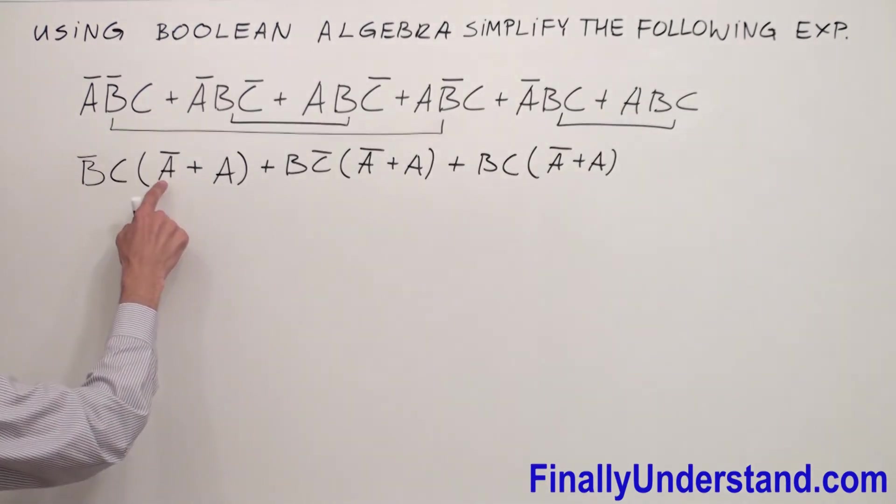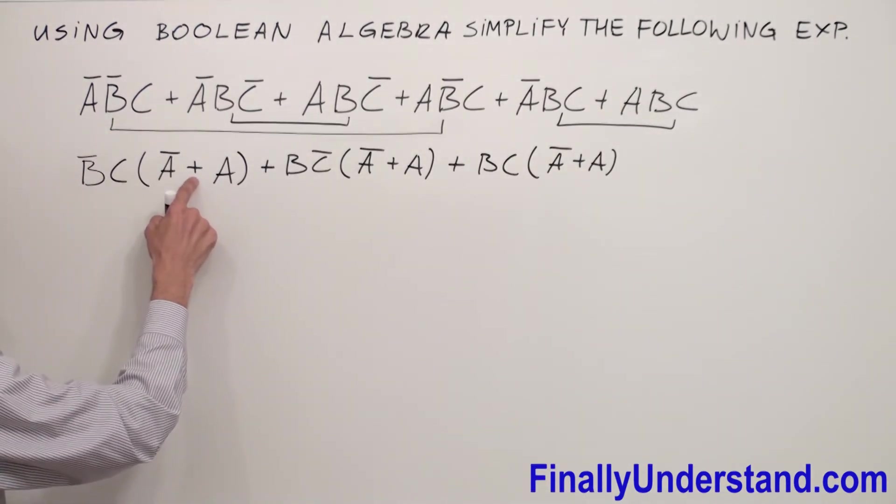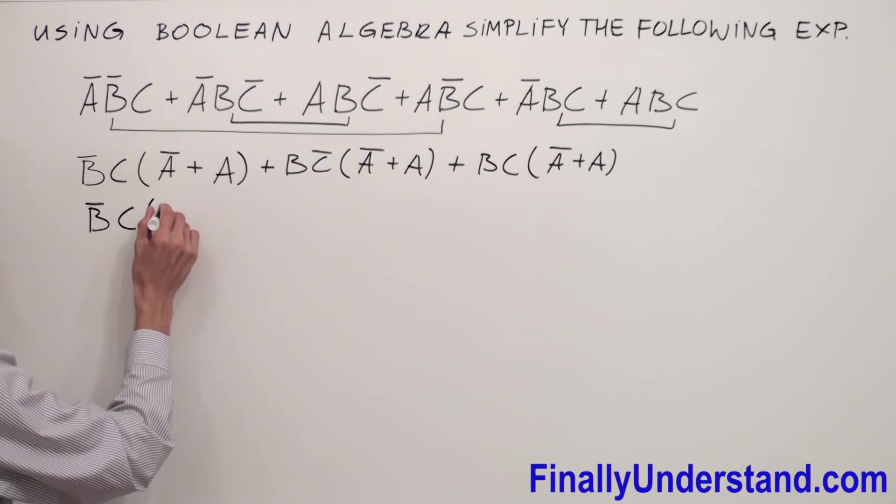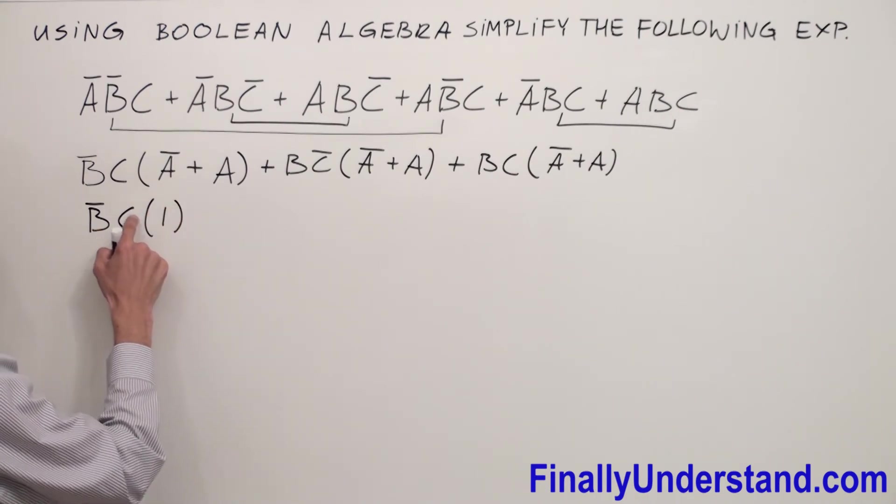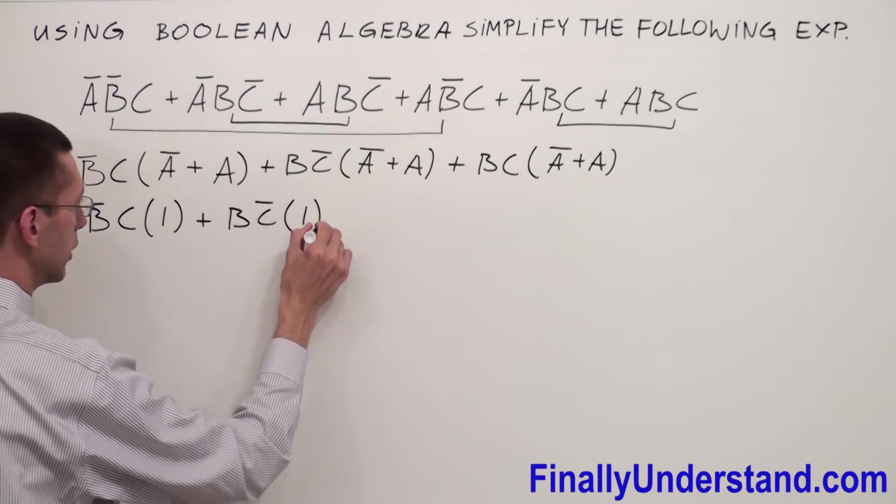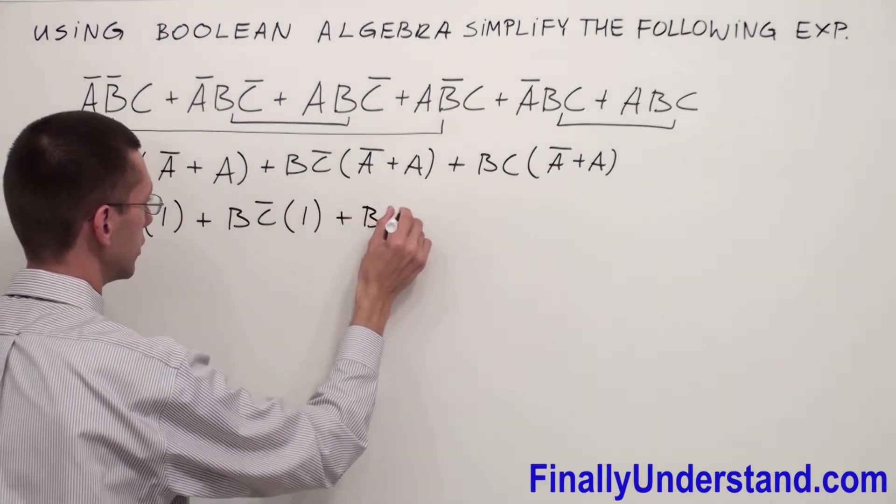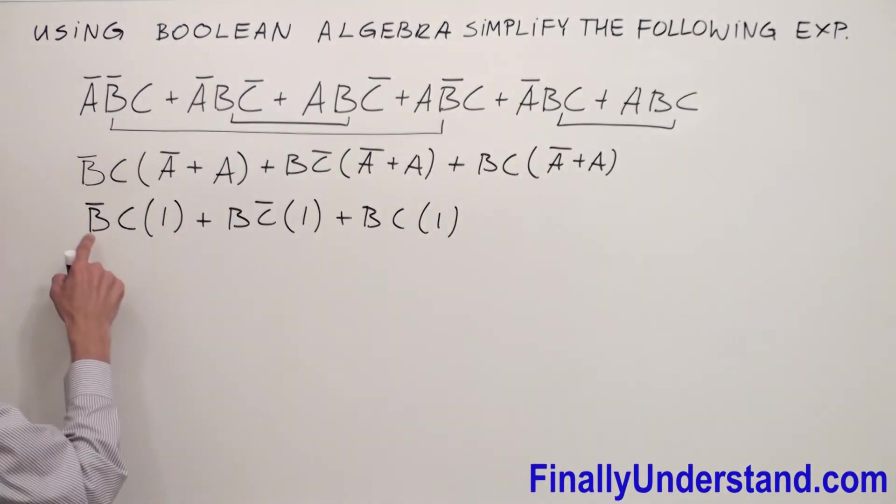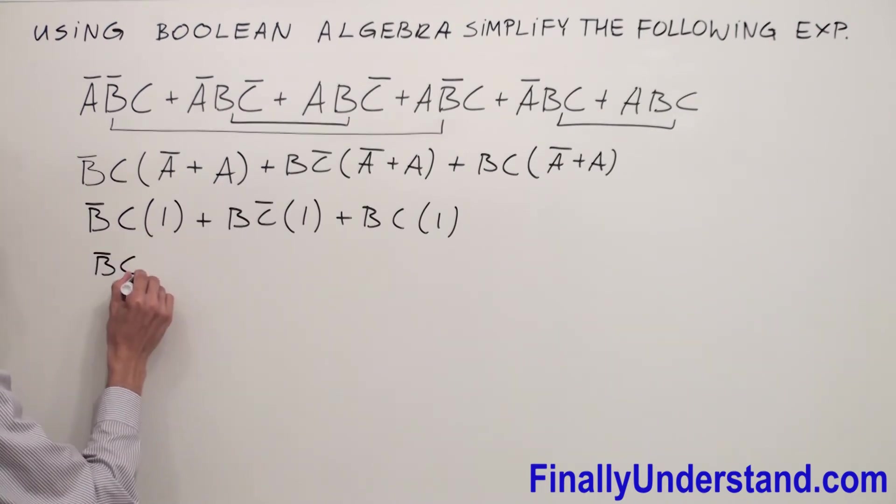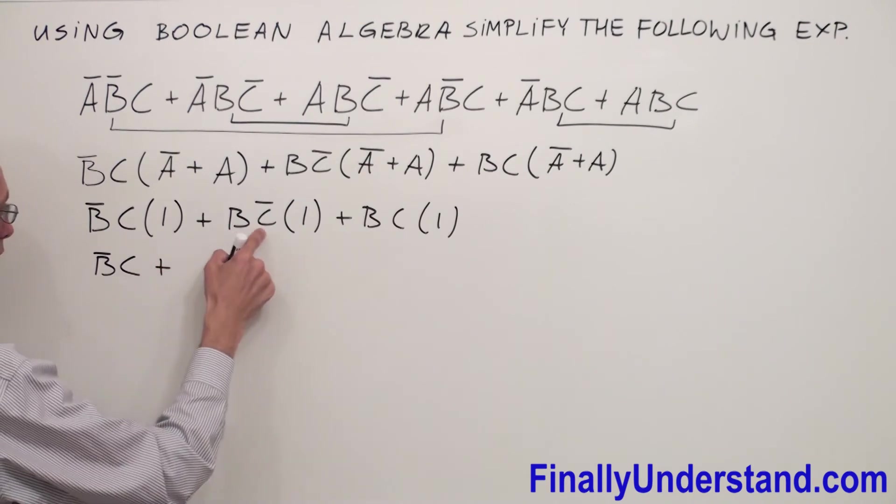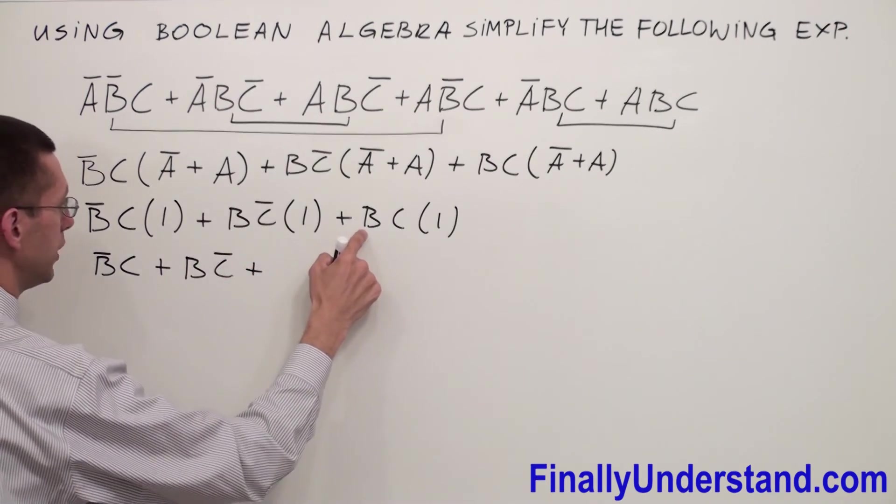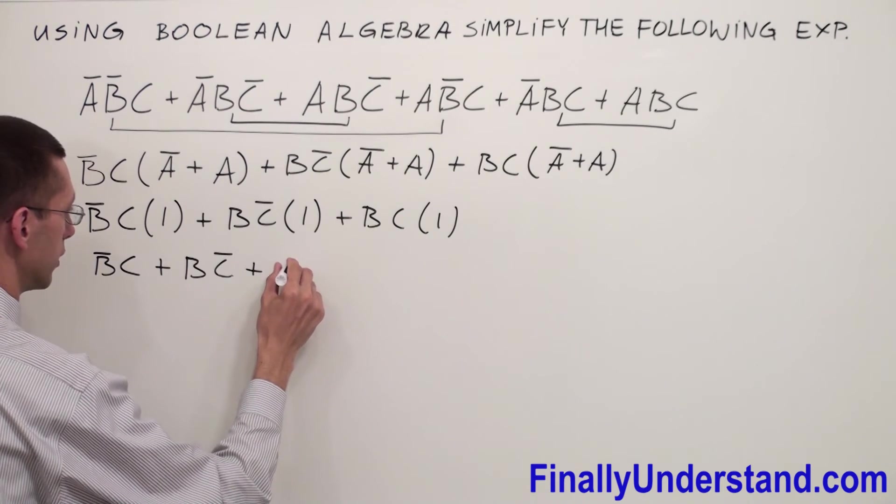Remember that complements OR together are going to give me one. So I'm going to have B̄C times one, or BC̄ times one, or BC times one. B̄C and one is B̄C, BC̄ and one is BC̄, and BC and one is simply BC.